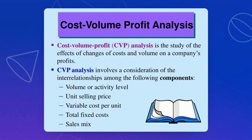So what would be the consideration particularly about the CVP analysis? When you say about CVP analysis, it involves consideration of the relationship among the following components: number one, you have volume or activity level; you have the unit selling price, the variable cost per unit, the total fixed cost, and the last one is about sales mix.